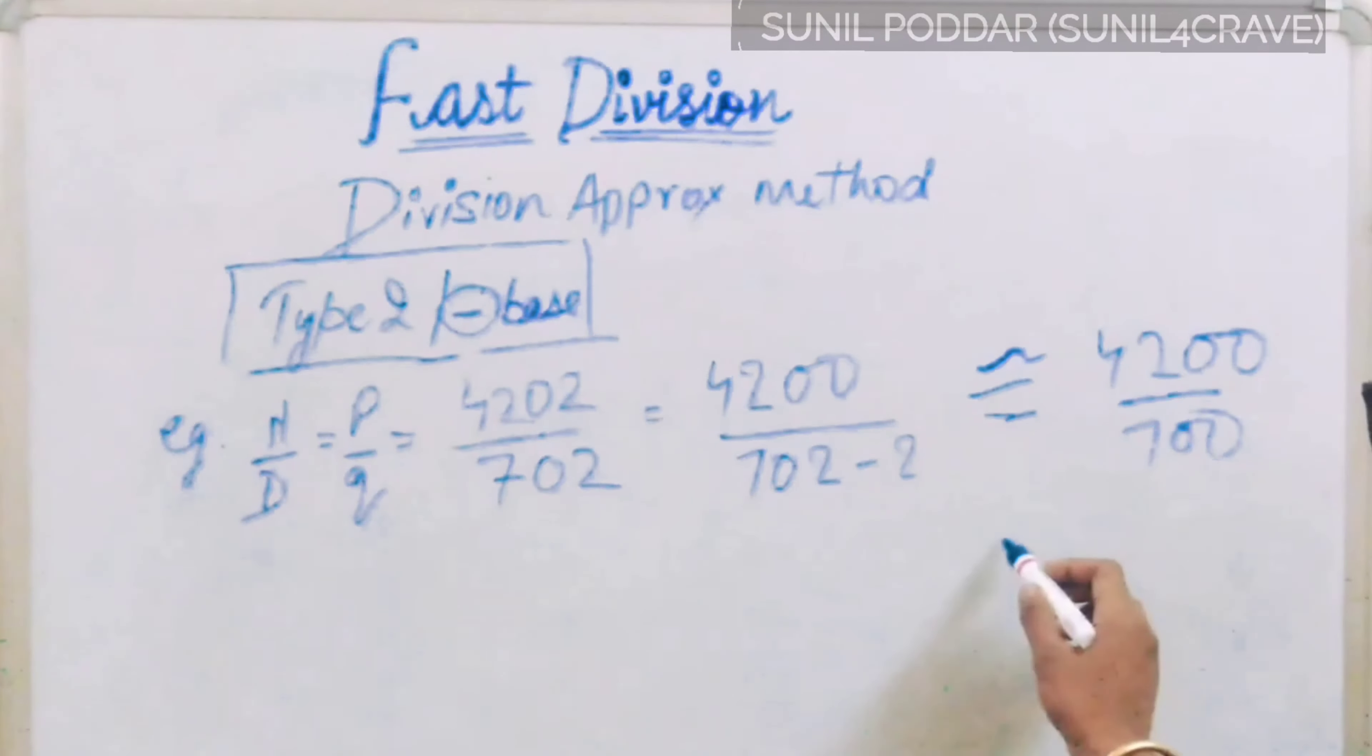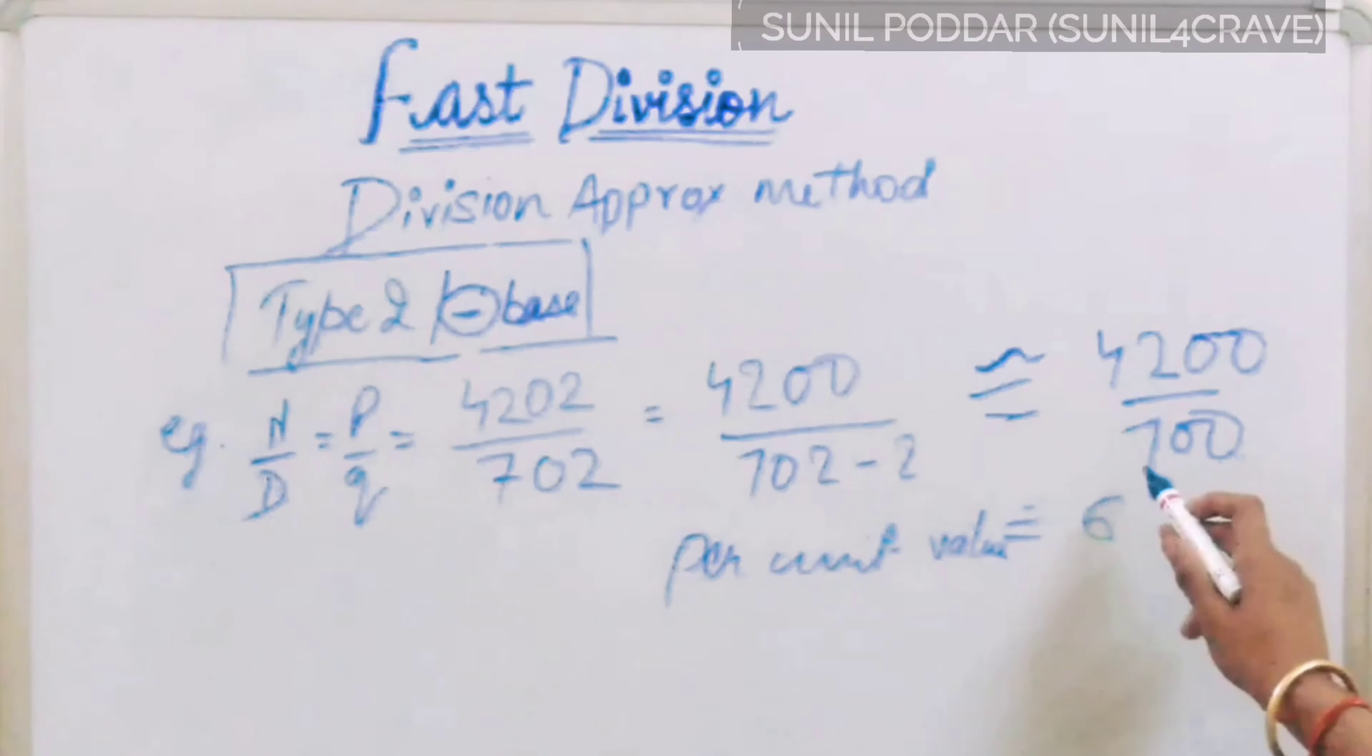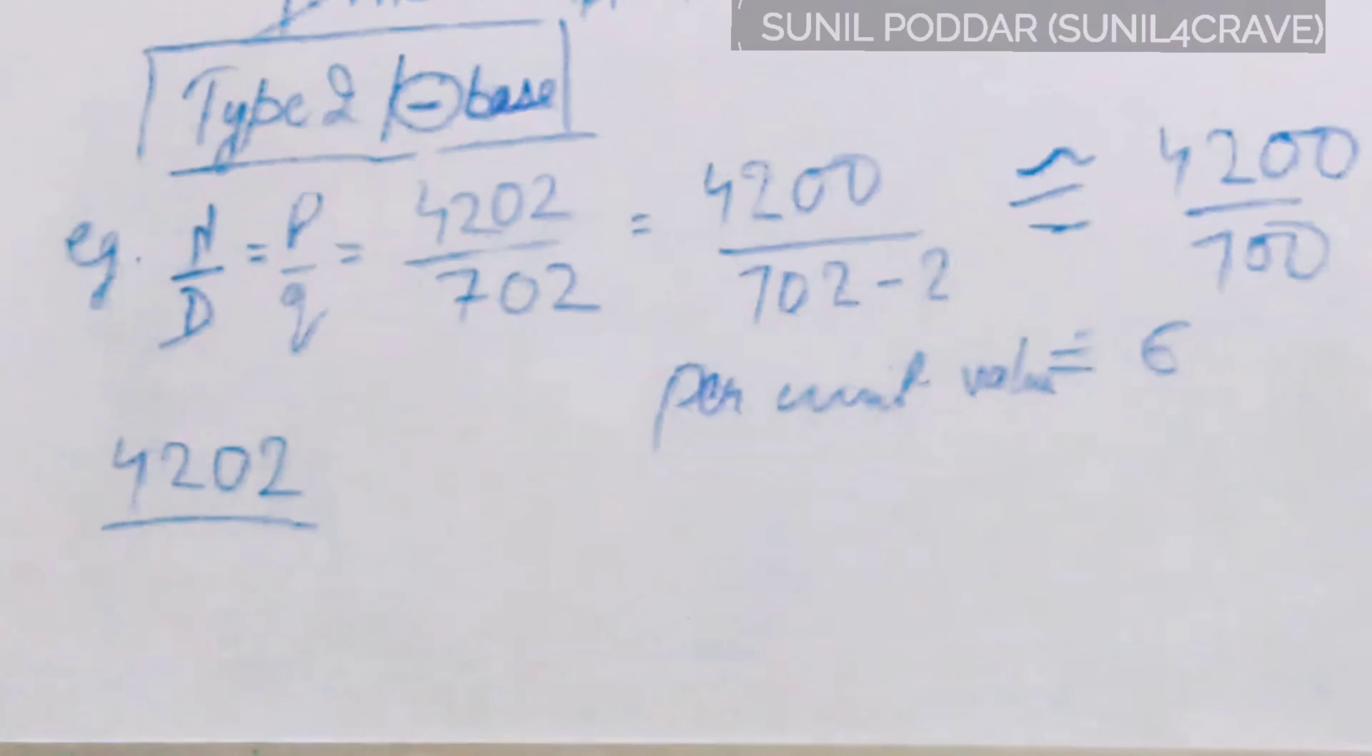And I keep 702 minus 2 concept here. We have to divide 4200 by 702 minus 2 is 700. So our answer, per unit value, is 6. Dividing this, we will get 6. That is our per unit value. 4202, as we already subtracted the minus 2, so we will use the negative concept here. As we subtracted to make it multiple of 100, we will multiply per unit value, that is 6, and we will keep the denominator as base, because we are using the base concept here.